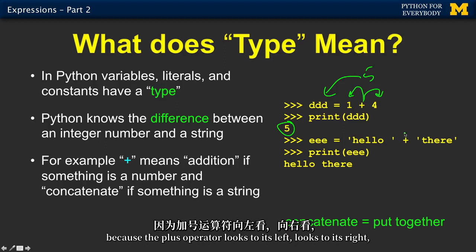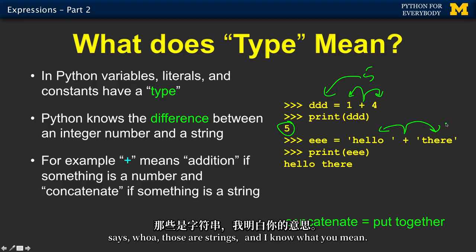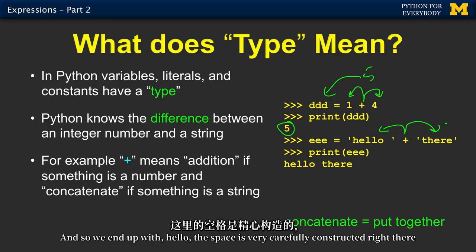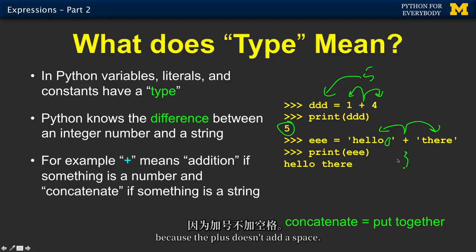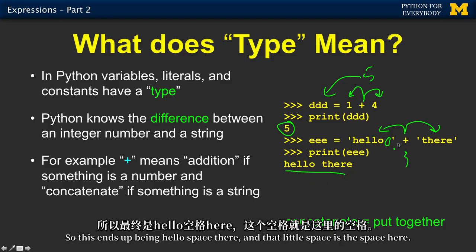On the other hand, we can actually use this same plus operator concatenating strings. Because the plus operator looks to its left, looks to its right, says, oh, those are strings. And I know what you mean. I think you mean to concatenate this. And so then we end up with hello, the space is very carefully constructed right there. Because the plus doesn't add a space. So this ends up being hello space there. And that little space is the space here.